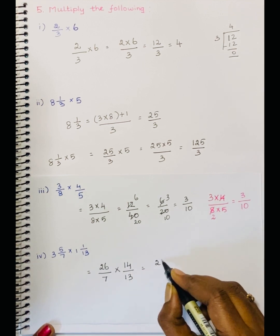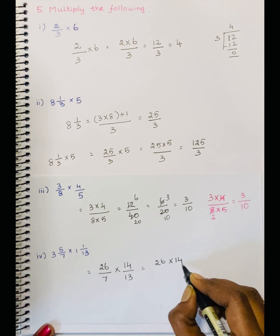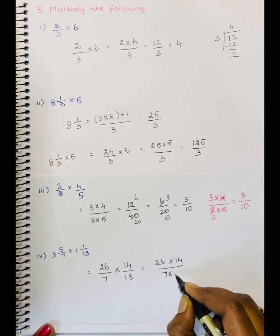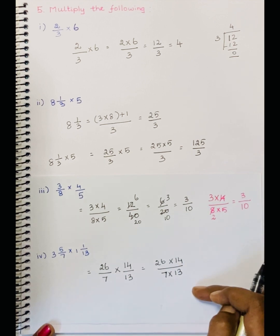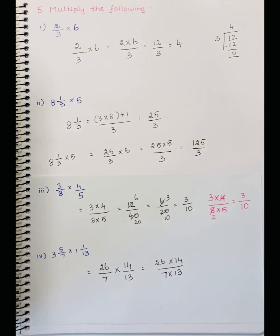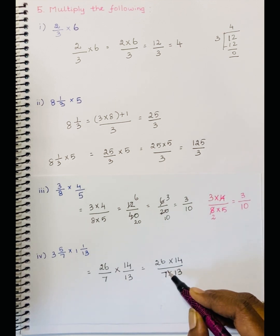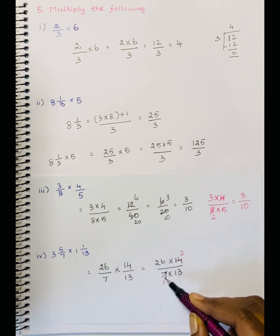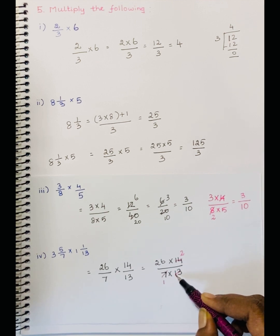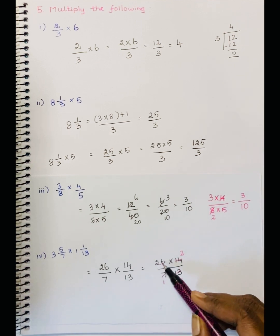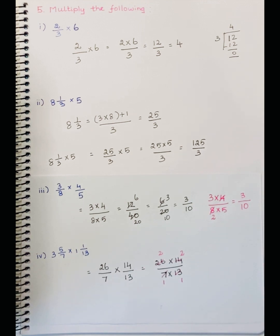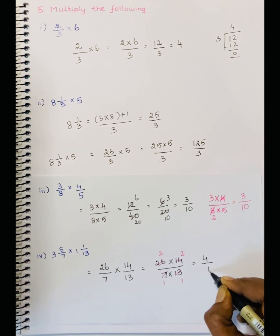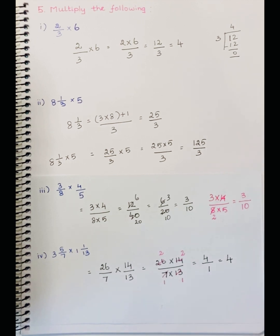Now multiply straight away: 26 by 7 into 14 by 13. 26 divided by 7 tables — 7 goes into 26 twice, giving 2. Cancel: 4 divided by 1 into 1, 1 is equal to 4. The answer is 4.